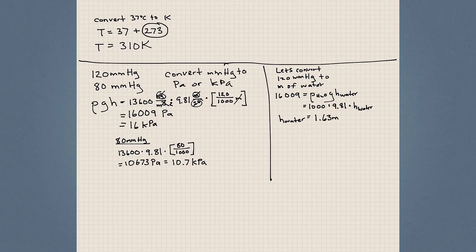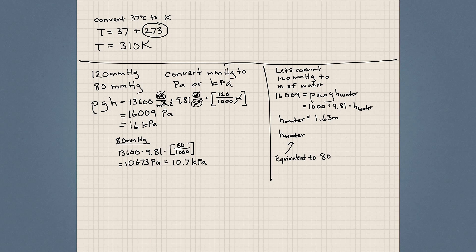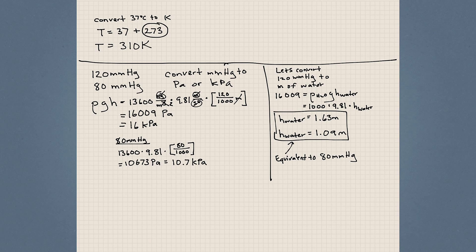I'd like you to practice the next one on your own: calculate the height of water equivalent to 80 millimeters of mercury. The answer is that 80 millimeters of mercury is equivalent to a height of 1.09 meters of water.